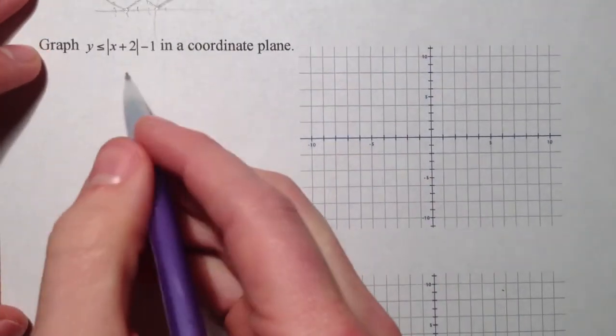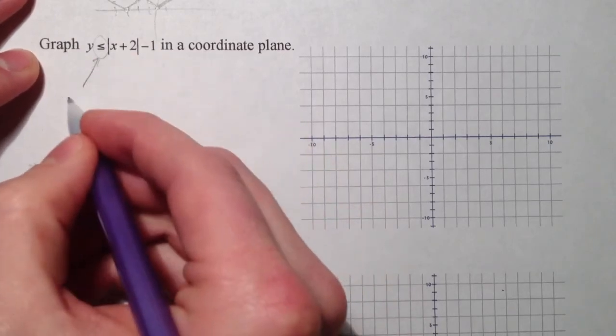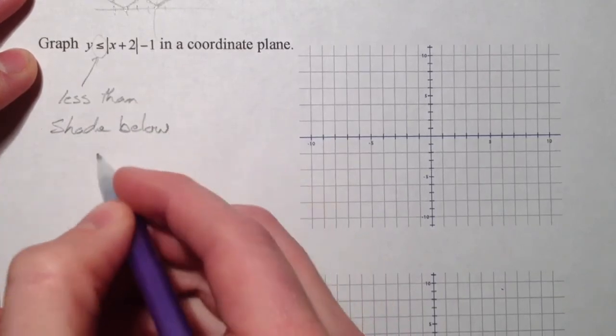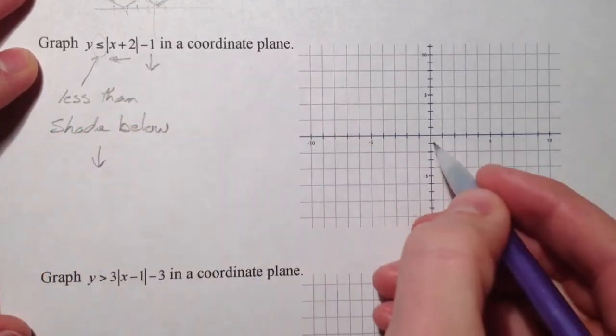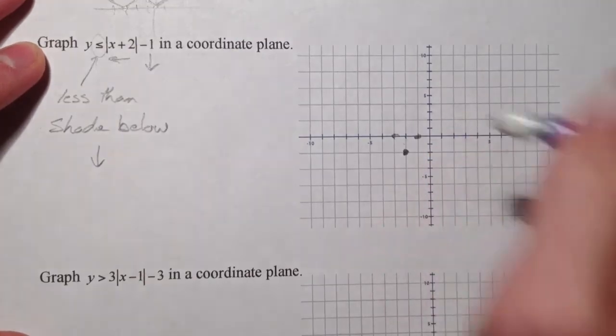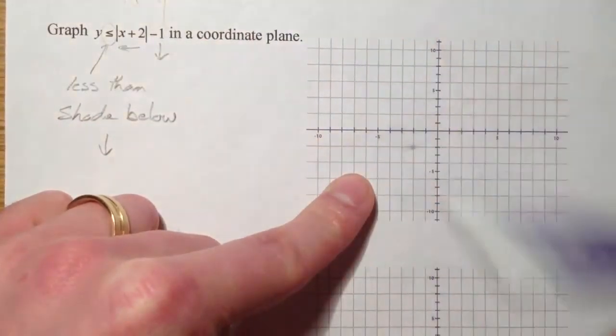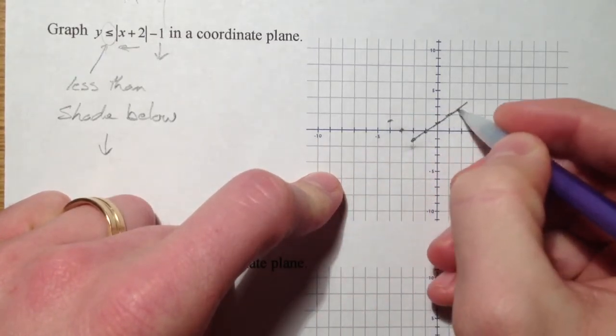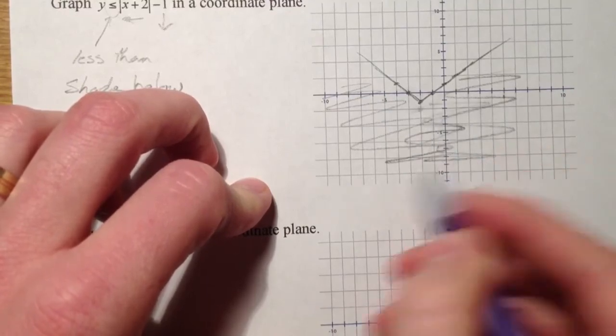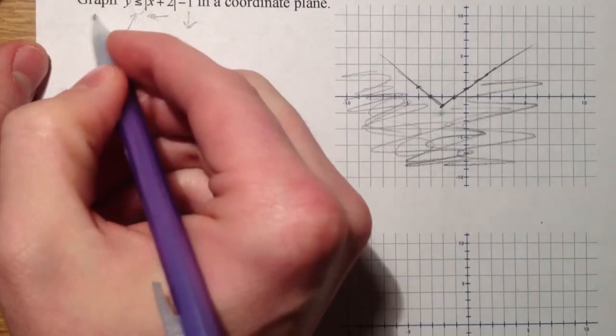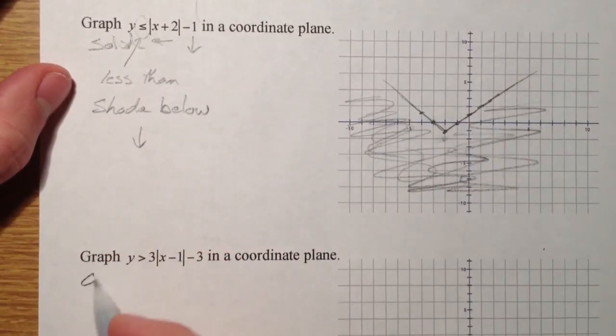We can also have inequalities. And so this just means less than, so shade below. Because all the Ys that are less than are below. So this is left 2, this is down 1. So I'm going to go left 2, down 1. And we can have our graph. We're going to shade just below here because it's going to include all the points less than that. And finally, remember that this is solid as well. And that this one down here is going to contain a dashed line.